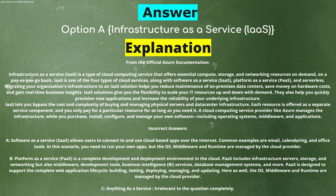Incorrect answers: Software as a Service allows users to connect to and use cloud-based apps over the internet — common examples are email, calendaring, and office tools. In this scenario you need to run your own apps, but the OS, middleware, and runtime are managed by the cloud provider. Platform as a Service is a complete development and deployment environment in the cloud, including infrastructure, middleware, development tools, and more, where the OS, middleware, and runtime are also managed by the cloud provider. Anything as a Service is not relevant to the question.